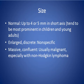Regarding size: normal lymph node size is about 4 to 5 mm in short axis, and nodes tend to be most prominent in children and young adults. If enlarged and discrete, it is nonspecific. If massive and confluent, it is usually malignant, especially with non-Hodgkin lymphoma.